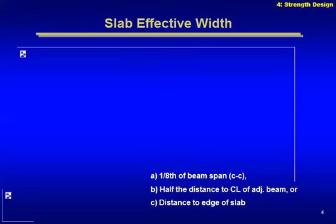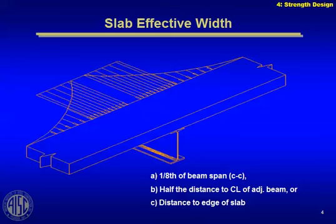The requirements for the effective flange of a composite beam really have not changed over the years. It's still one-eighth the span of the beam, half the distance to the centerline of the adjacent beam, or in the case of spandrel beams, the distance to the edge of the slab. What we're doing is picking an effective flange width where that uniform stress diagram is equal to the area under the real stress distribution diagram.